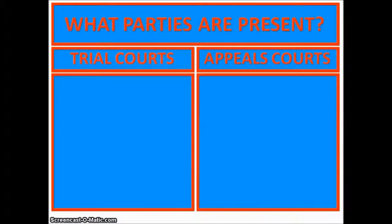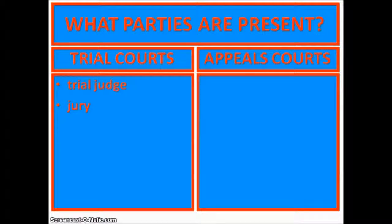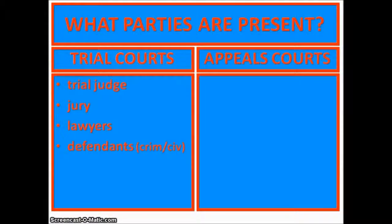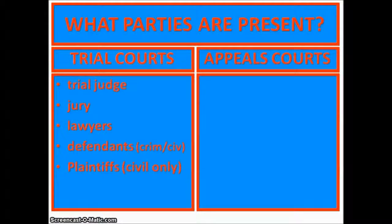In terms of who's present: in a trial court, we have the trial judge, a jury, the lawyers, the defendant — whether criminal or civil — and in a civil case, the plaintiff, who is the person suing. And then we have witnesses. That's the key thing: we have witnesses there, because an appeals court is very different.